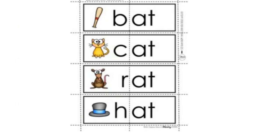So let's take a look at these words and try to read them. All these words have the sound at at the end. Look at the first one: bat — B, at, bat. How about this one? C, at, cat. How about this one? R, at, rat.